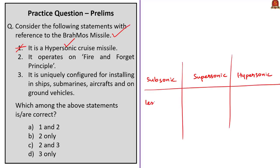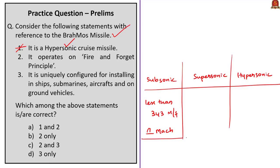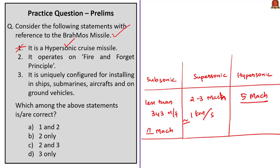The speed of sound is 343 meters per second, referred to as one Mach. Subsonic cruise missiles fly below one Mach. Supersonic cruise missiles travel at around two to three Mach — approximately one kilometer per second. Hypersonic cruise missiles travel at five Mach or above. BrahMos is a supersonic cruise missile, so the first statement is incorrect.